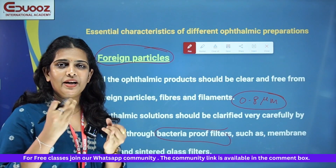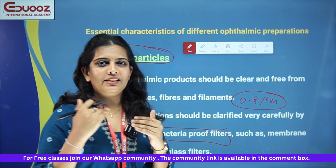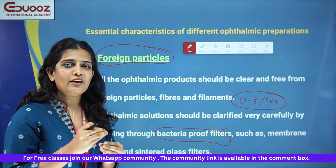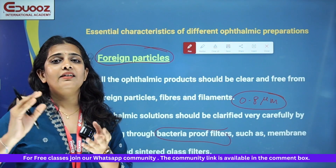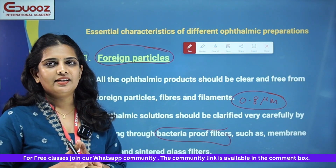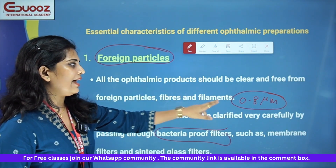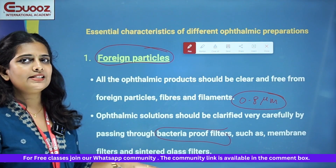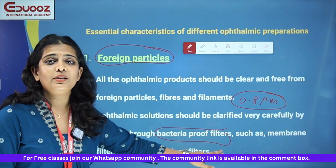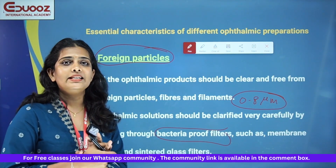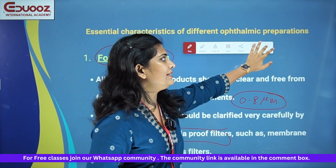The steps in preparation are: preparation of the drug or medicament, dissolution, then clarification, and then sterilization. Clarification means passing through bacteria-proof filters such as membrane filters and sintered glass filters, with pore size of 0.8 micrometers, to remove all foreign particles, fibers, and filaments.